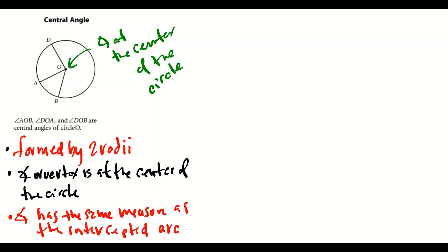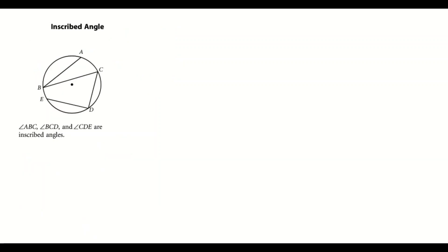We also know that the central angle has the same measure as its intercepted arc. For example, if angle DOA has a measure of 45 degrees, then arc DA also has a measure of 45 degrees.